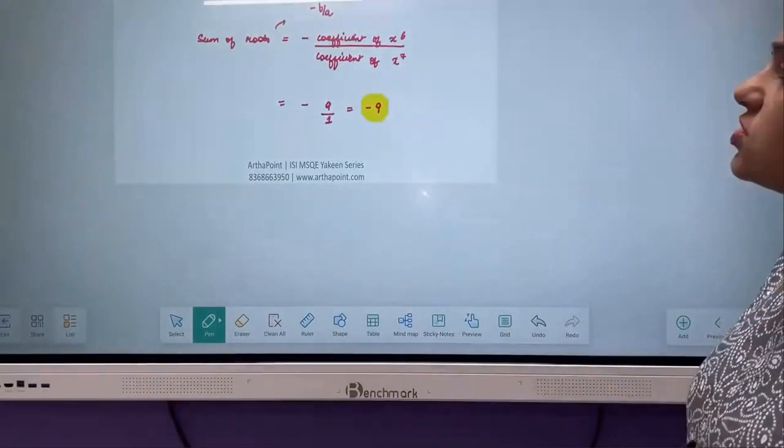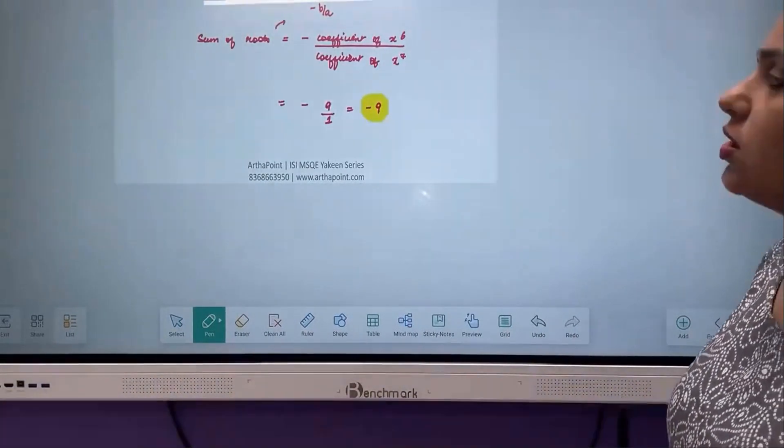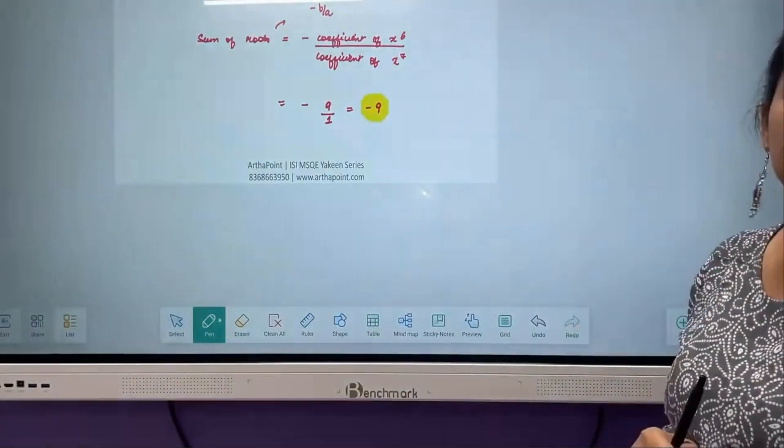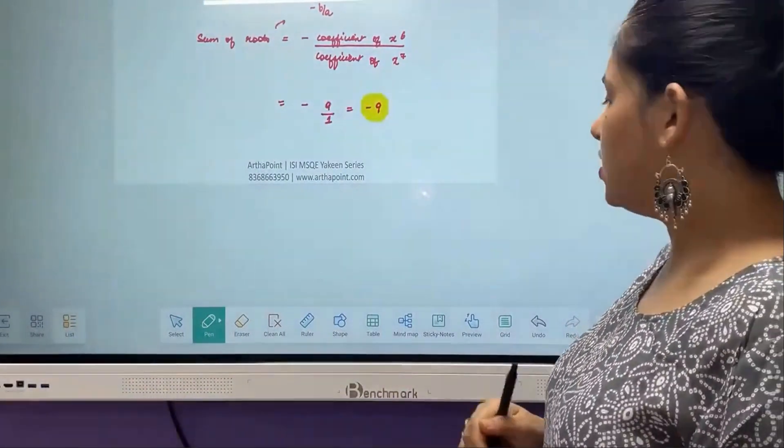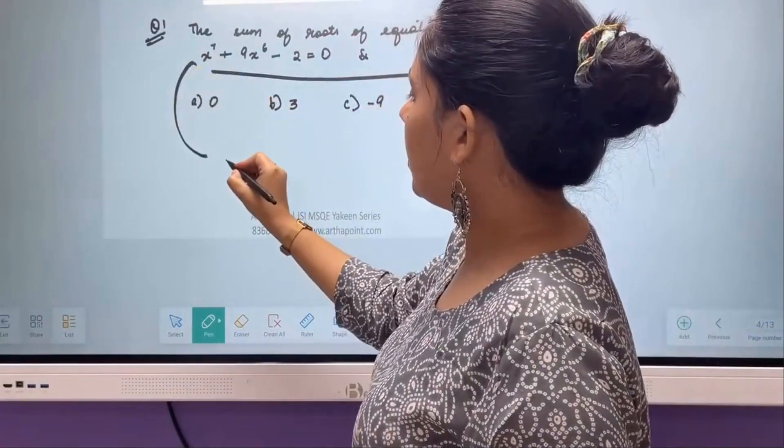So it is very simple. All of you are answering it absolutely correct. The sum of roots is given by minus B by A. So in this case, if you see this, I can go ahead and write this equation as